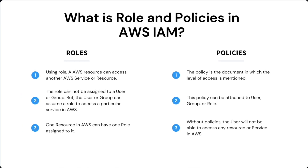The next question is: what are service roles and policies in AWS IAM? An AWS role is similar to an AWS user, but the difference is that you cannot log into the AWS Management Console using role credentials. The role does not support a password the way a user does. We use a role when an AWS resource needs to access a different service or other resources in the AWS account. For example, an EC2 instance that needs to access data in an S3 bucket.